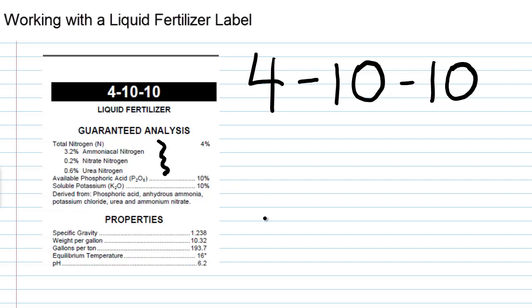Now what we need with liquid sources is we need to know the weight per gallon when we start working about how much of these products do I need. So every gallon of this material weighs 10.32 pounds.